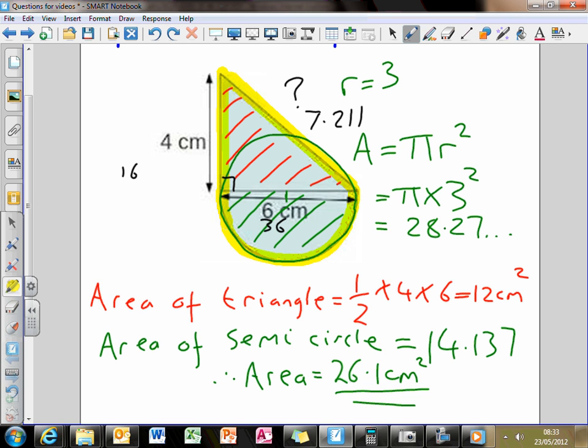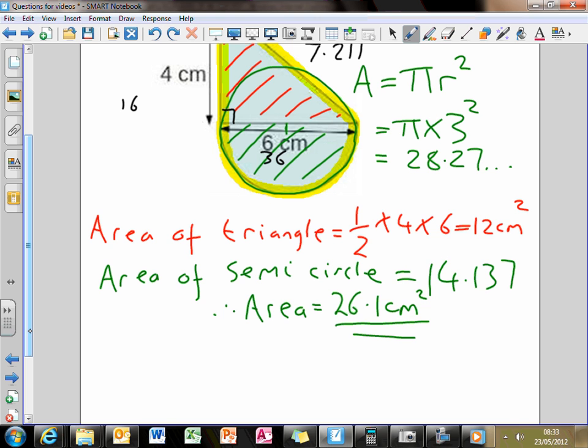So what I need to do is work out half the circumference of a circle, okay? So let me scroll down the board a bit, now I know, and I hope you know, that the formula for the circumference of a circle is given by pi times the diameter, okay?